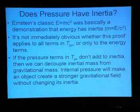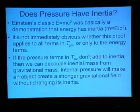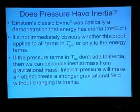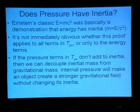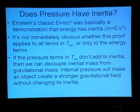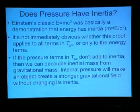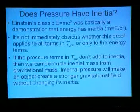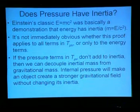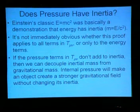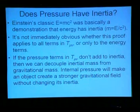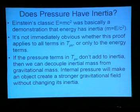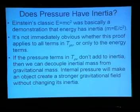Now a question: does pressure have inertia? Einstein's E equals MC squared was basically a demonstration that energy has inertia — you can write it as M equals E over C squared. It's not immediately obvious whether Einstein's proof applies to all terms in T mu nu or only to the energy terms. So for the moment, we're going to assume that the pressure terms in T mu nu don't add to inertia. Then we can decouple inertial mass from gravitational mass.